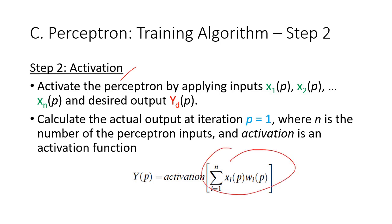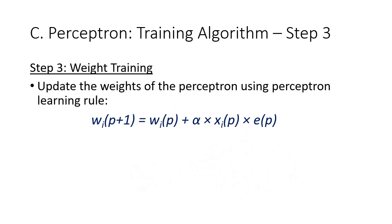The results of inputs times weight for x1, x2, up until xn will be added together. This will result in the value of capital X, and then this capital X will be compared with the activation function to get the actual value of capital Y. Step 3 is weight training.